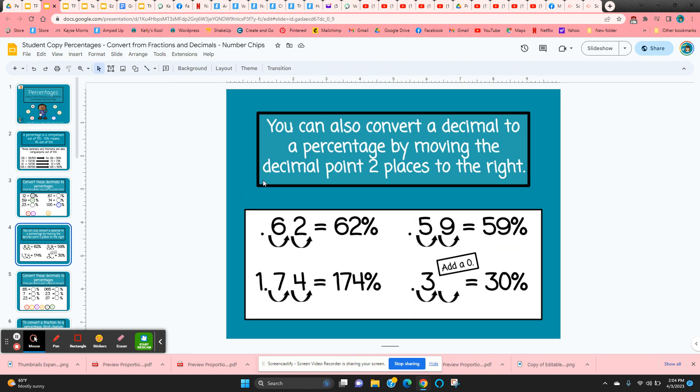The next slide shows another way to convert from a decimal to a percentage, is to move the decimal point two places to the right. So 62 hundredths, if we move that decimal point two places to the right, we get 62%. One in 74 hundredths, we move the decimal point two places to the right, would be 174%. And then this one, if you move it two places to the right, and there's a blank space, you need to add a zero, which would make it 30%.